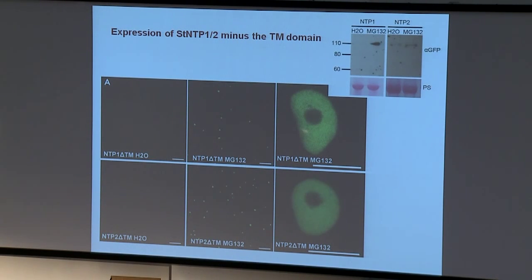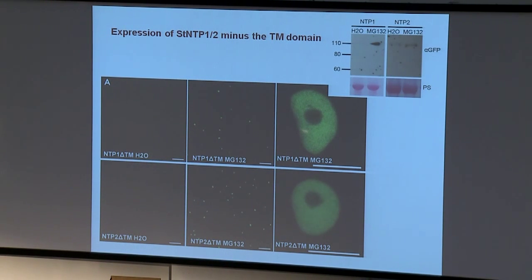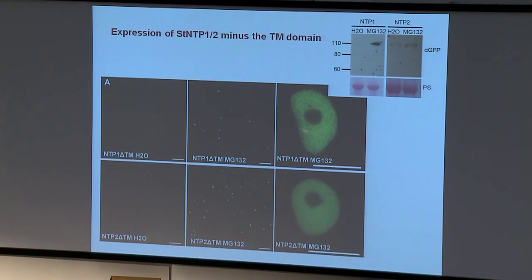Both NTP1 and NTP2 also localize to the ER network, which goes around the outside of the nucleus and is contiguous with the nuclear envelope. When we removed the transmembrane domains of these NAC transcription factors, we were interested to see whether they went into the nucleus. Initially we couldn't detect them at all in westerns or under the microscope until we added the proteasome inhibitor MG132.